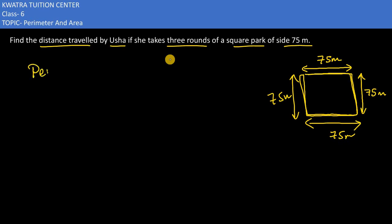We would first find the perimeter of the park, because that would give the answer for one round. And if we want to calculate three rounds of the park, then what will we do? We will multiply by three.